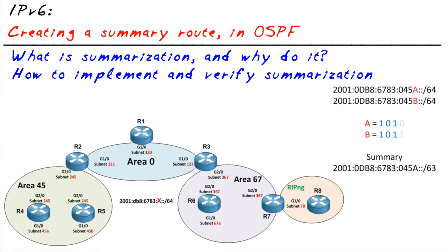In this micro nugget, we've taken a look at the concept of summarization. In our example, we created a single summary route that represented two more detailed routes. Now, just saving one routing entry on a local topology isn't a big deal, but in a larger environment like the internet with IPv6, we could have a single route that represents tens of thousands of more detailed networks.